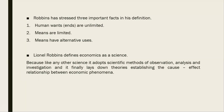Robbins also defines economics as a science. Like any other science, it adopts the scientific method of observation, analysis, and investigation, and finally lays down theories establishing cause-and-effect relationships between economic phenomena. Through observation, analysis, and investigation — these three processes of scientific method — it finally lays down theories which establish cause-and-effect relationships between economic phenomena.